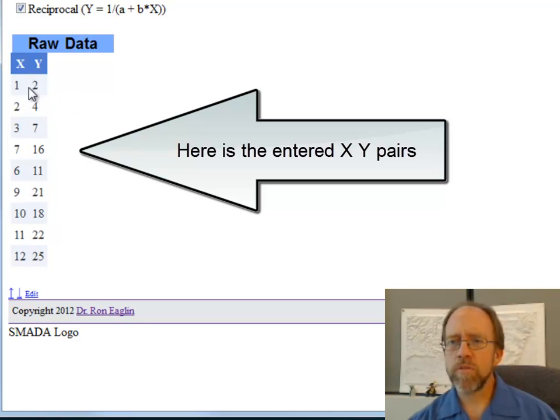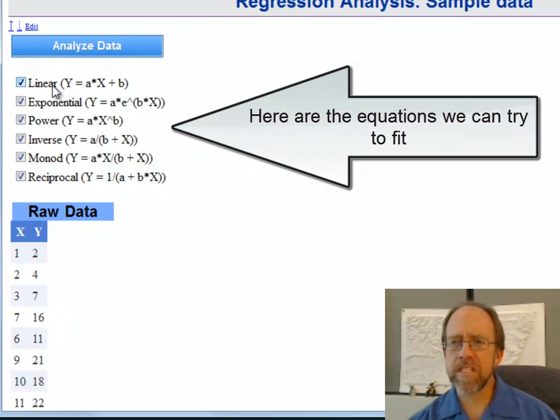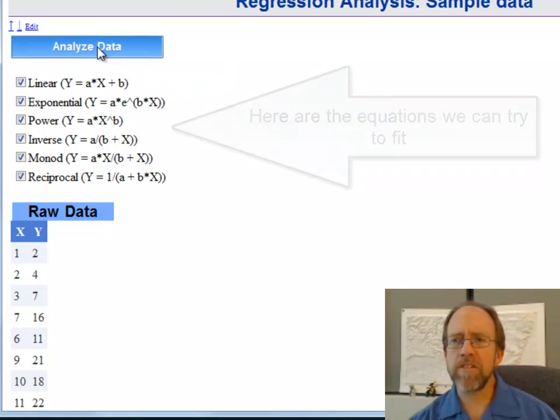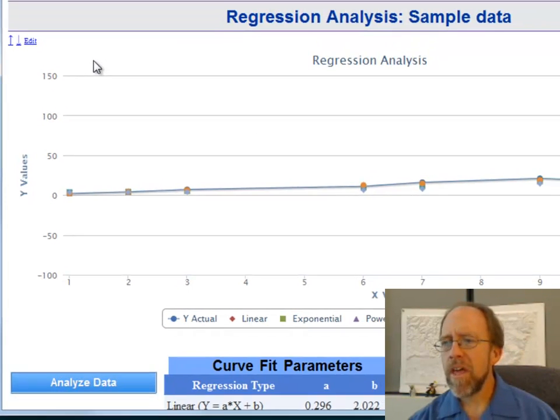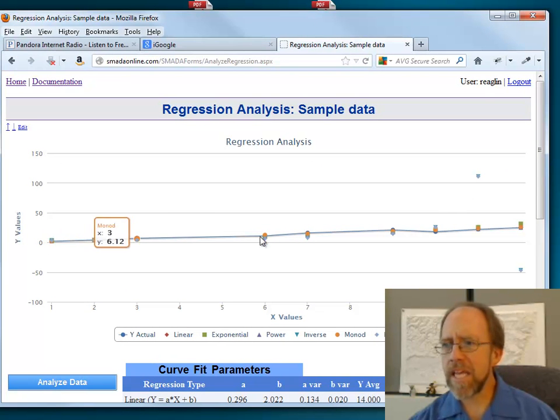And it's just x, y pairs on x and y, 1, 2, 2, 4, 3, 7. And I have here this series of sets of equations here, linear, exponential, power, inverse, minot, and reciprocal. If I click on analyze data using all the different data sets, I'm going to get a nice little curve of how it fits.